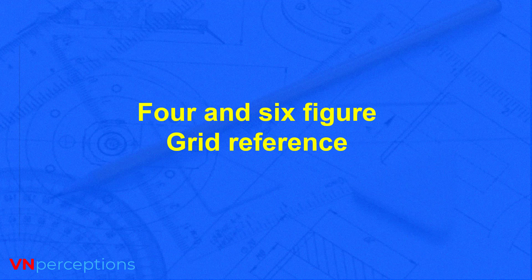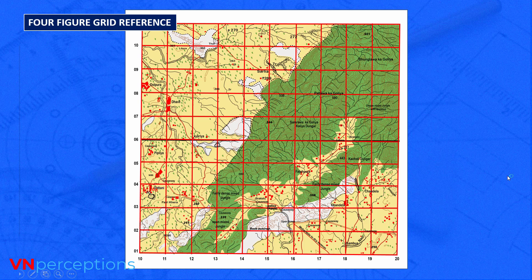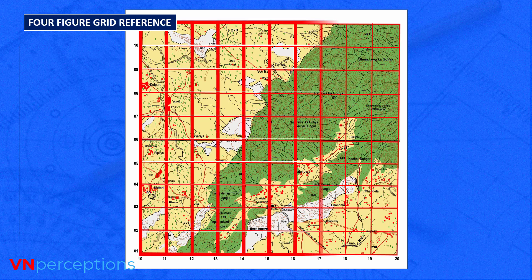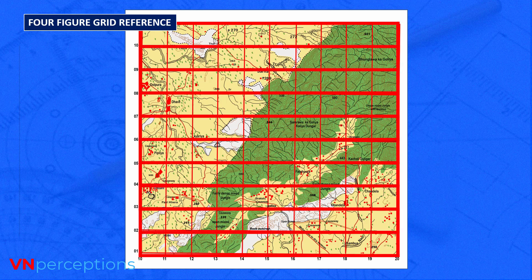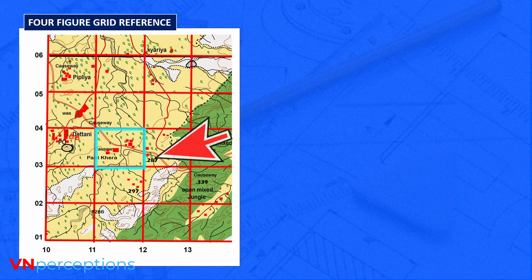Now let us understand the four-figure and six-figure grid reference in the map. In the exam, they give you one block and ask for the four-figure grid reference. You must know that the vertical lines are eastings and the horizontal lines are northings, as their numbers increase eastward and northward respectively. You must remember the letter L: first the vertical line, then the horizontal line.